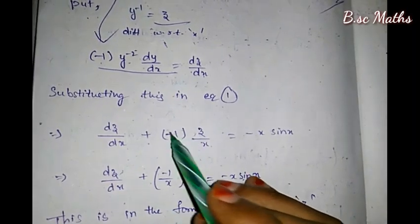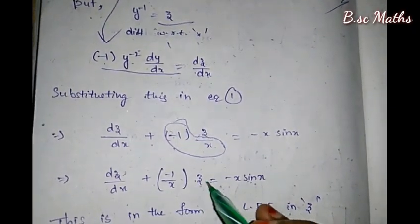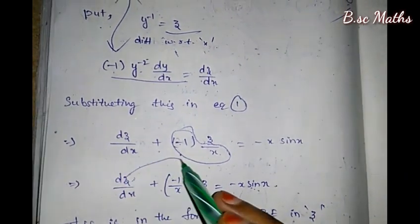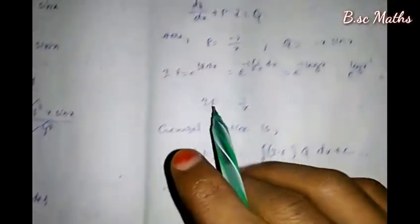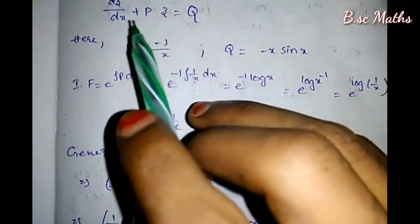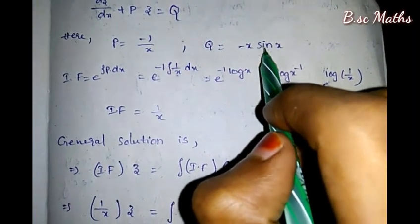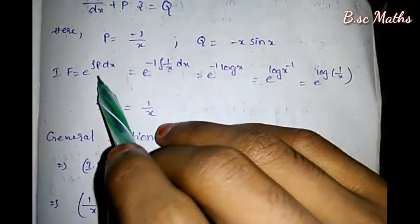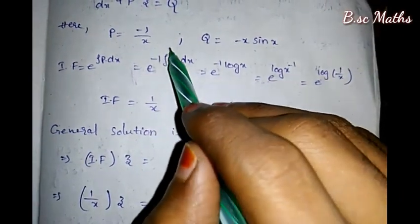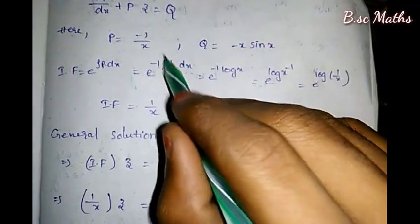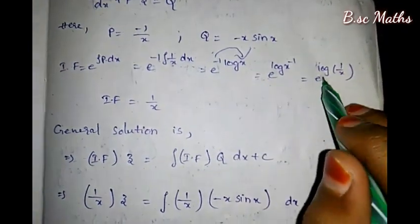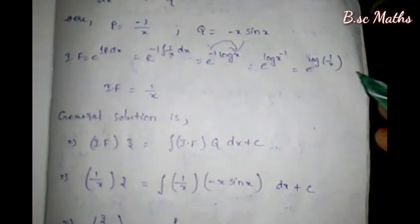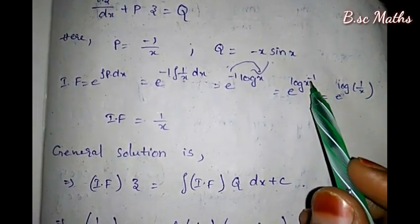So dz/dx plus minus 1/x times z equals minus x·sin(x). This is a linear differential equation in z. Here P value equals minus 1/x, and Q value equals minus x·sin(x). Integrating factor is e to the power of integral P dx, which is e to the power of minus integral 1/x dx. Integral of 1/x is log(x), giving e to the power minus log(x), which equals 1/x.